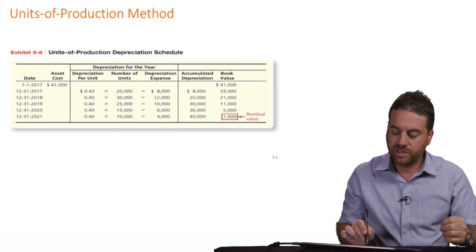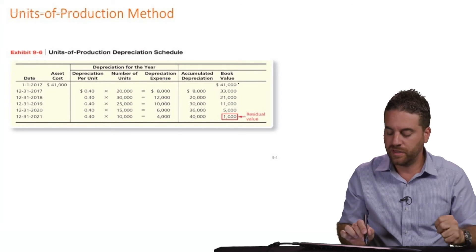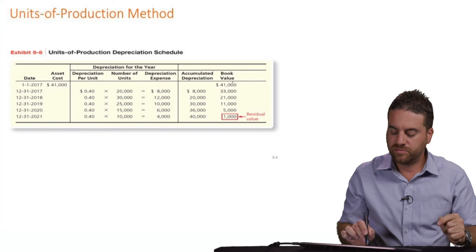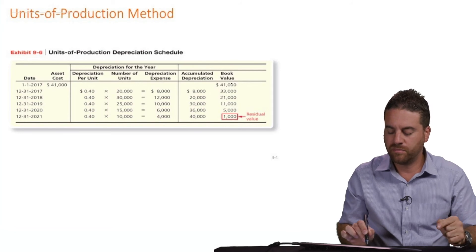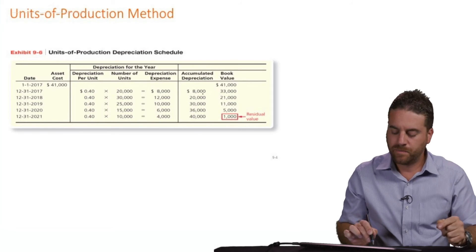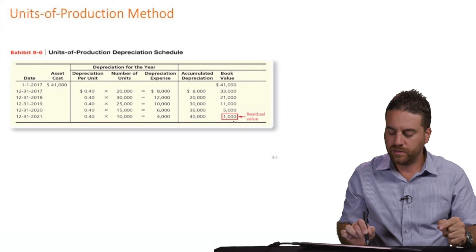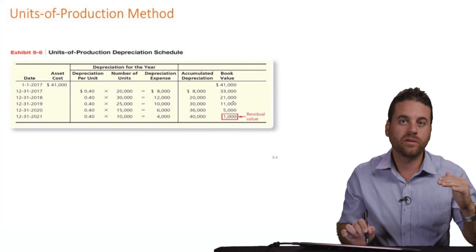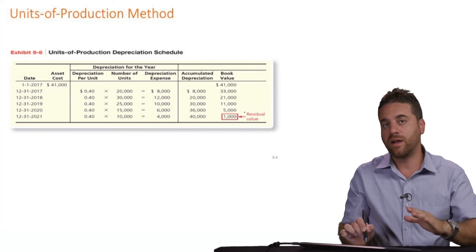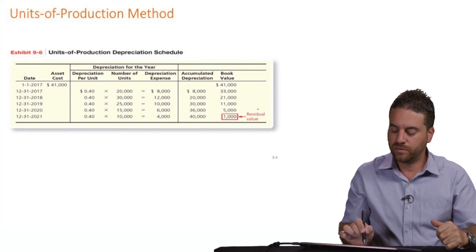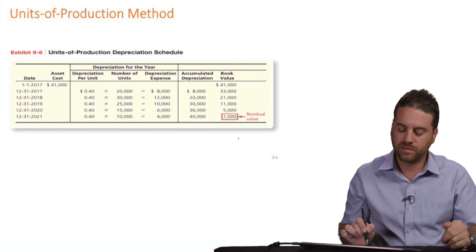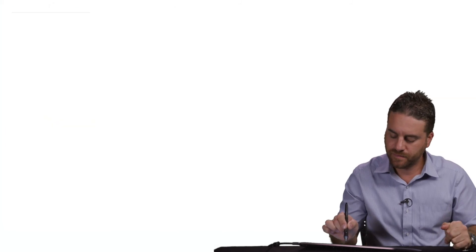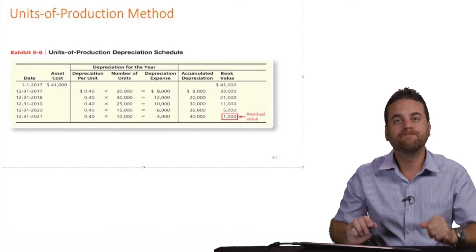The book value, we discussed the book value in the previous video. So you just subtract the accumulated depreciation from the original cost that will give you the book value at some point. And then the book value at the end of year five should equal the residual value. Otherwise, there's something wrong in calculation. Okay? Thank you.